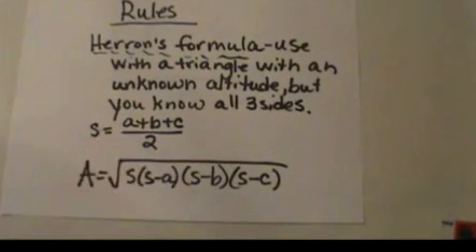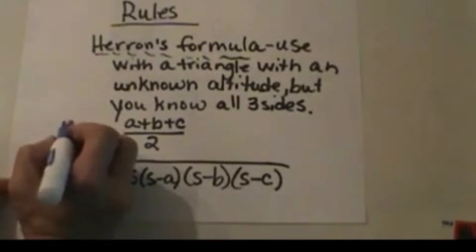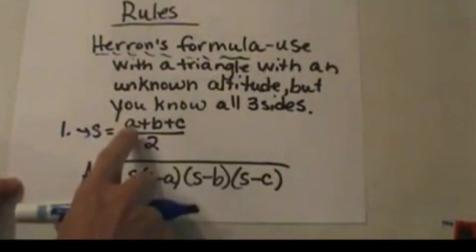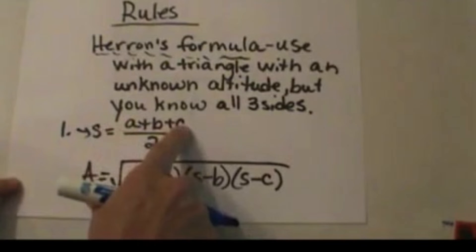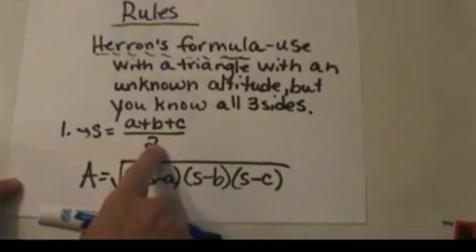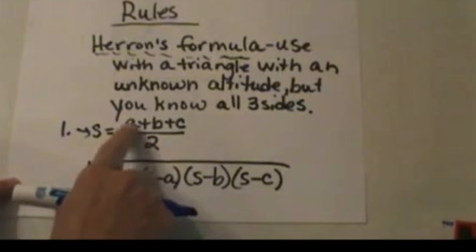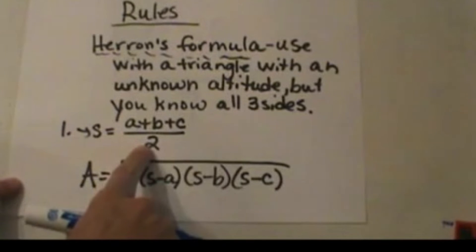Your first step, or step one, is going to be to find what we call S. S is the variable that we're going to add all three sides up and then divide by two. So it's not dividing by three, so it's not averaging the sides. You add the three sides up and divide by two.